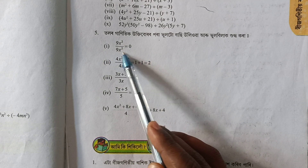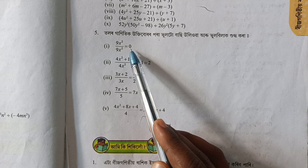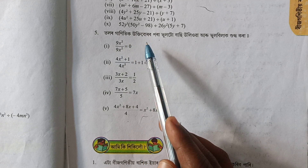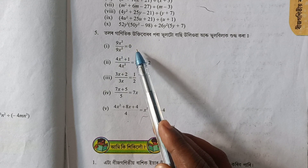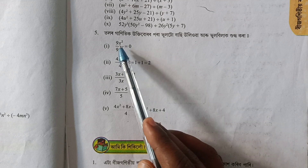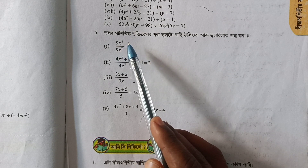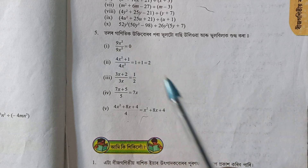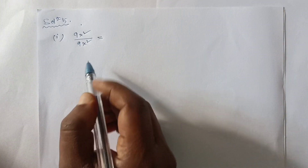The first thing is: 9x² is equal to 0. Per one, x² equals 1.